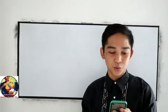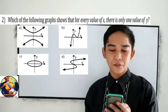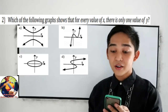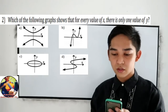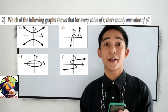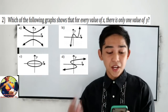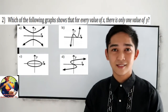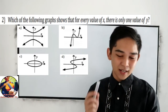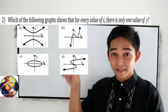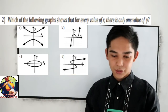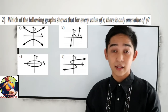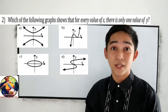Next, number 2: Which of the following graphs shows that for every value of x, there is only one value of y? In here, we're going to use the vertical line test. You can check our playlist to understand the vertical line test. In this case, our answer is letter B.